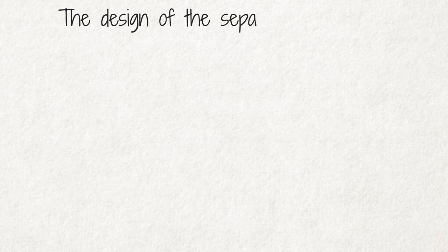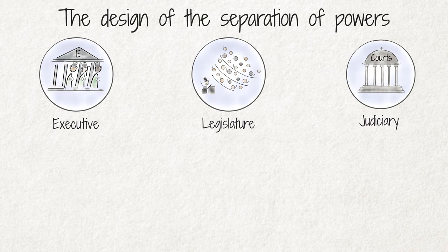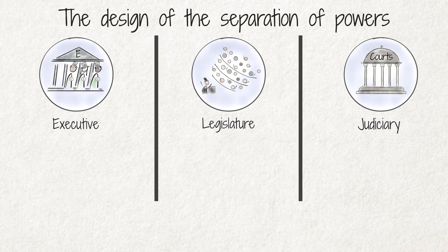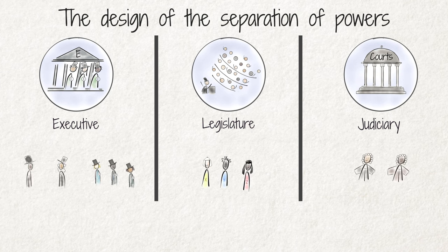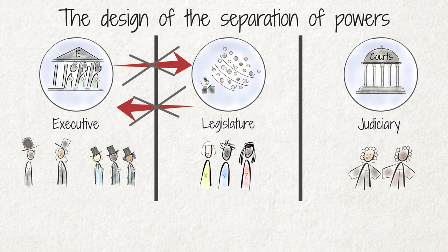The design of the separation of powers differs from country to country. In some democracies, there is a clear separation not only of the functions but also of the personnel in each branch. In such systems, an individual cannot serve in more than one of the branches of government at the same time.